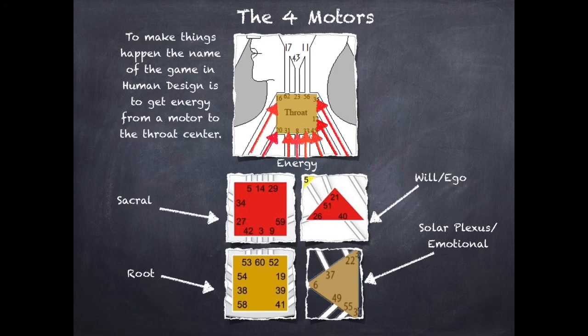So now that we know that all generators will have a red square or a defined sacral, what's the difference between a generator type and a manifesting generator? Well, it all comes down to a motor. I've already talked about motors in another video, but I think it's worthwhile just to review it one more time. In human design, there are four motors in the body. Generators will always have a red square or a defined sacral motor, but they're never limited to just one motor. In fact, they could have all four motors defined.